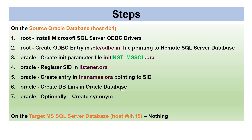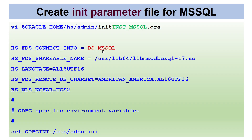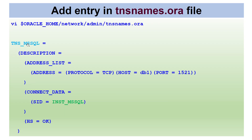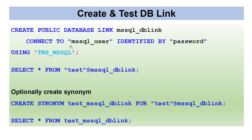To create the DB link, you can create either a public or private database link. The syntax is: CREATE DATABASE LINK <link_name> CONNECT TO <mssql_user> IDENTIFIED BY <password> USING <tns_entry>. The user is the SQL Server user who has access to the remote database, and the TNS entry refers to the entry we created in tnsnames.ora. Once the DB link is created, we can access tables from the SQL Server database via Oracle.